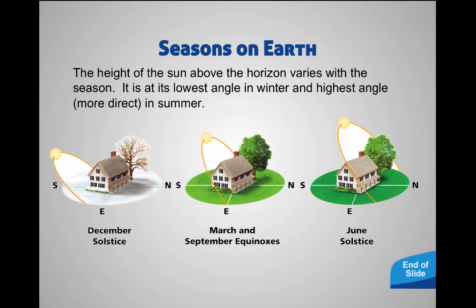This becomes more extreme as you get towards the poles. If you're at the North or South Pole during one of the solstices, you may experience no sunlight for 24 hours, or you may experience nothing but sunlight for 24 hours. It all depends on where you are and which time of the year.